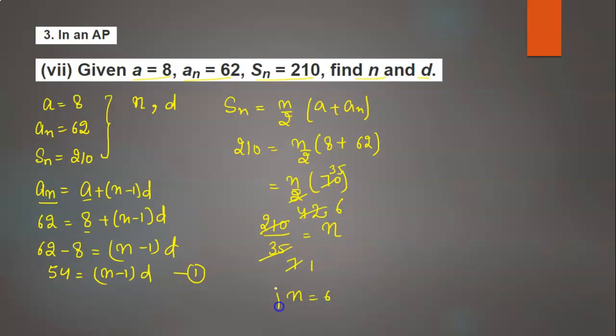Now put the value of n in the first equation. 54 = (n-1)d becomes 54 = (6-1)d. Since 6 - 1 = 5, we have 54 = 5d. Shifting 5 to the left by division, d = 54/5.